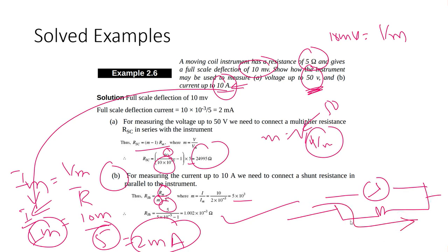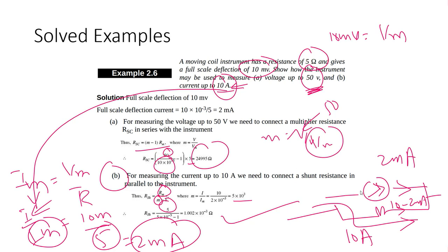With this shunt in place, at full scale deflection 2 milliampere flows through the meter and the remaining (10 minus 0.002) amperes flow through the shunt. The meter is protected up to 10 amperes; beyond that it would burn.